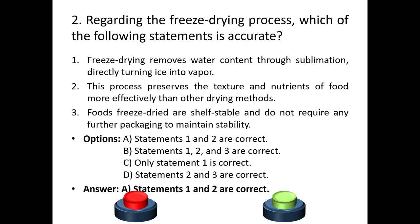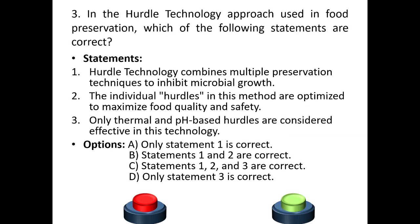Statements one and two are correct. Third question: in the hurdle technology approach used in food preservation, which of the following statements are correct? Statement one: Hurdle technology combines multiple preservation techniques to inhibit microbial growth. Statement two: The individual hurdles in this method are optimized to maximize food quality and safety. Statement three: Only thermal and pH-based hurdles are considered effective in this method.